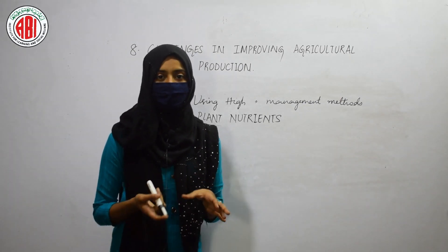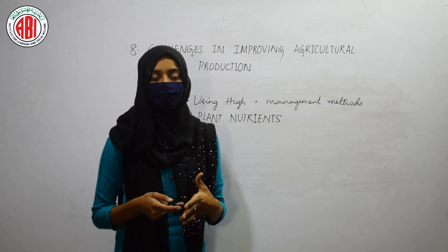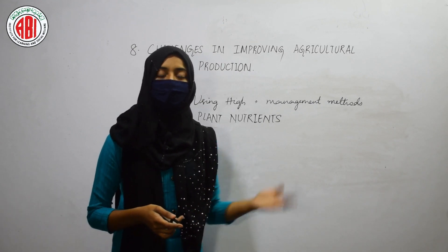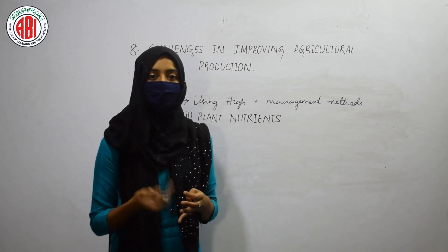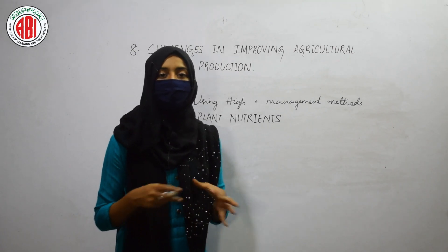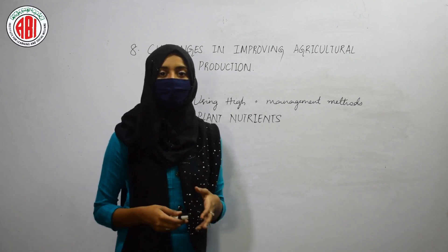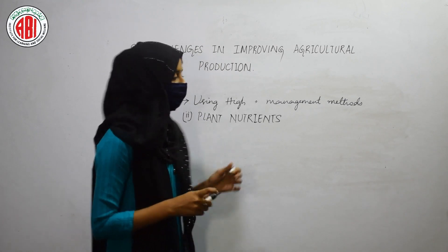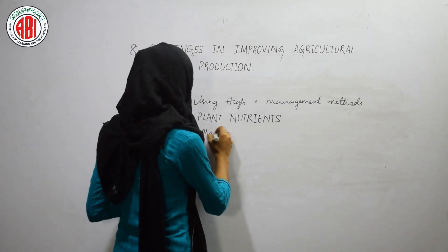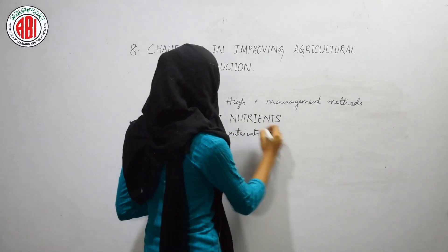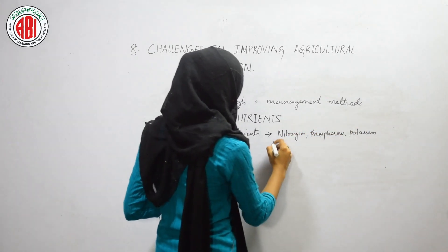Among all the nutrients in the soil, some are required in larger amounts by plants — these are called macronutrients. Macronutrients are nitrogen, phosphorus, and potassium — in short, NPK. N stands for nitrogen, P is for phosphorus, and K is for potassium. These are the nutrient elements required in larger amounts by the plant body.